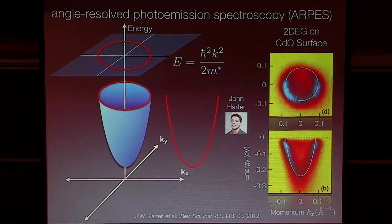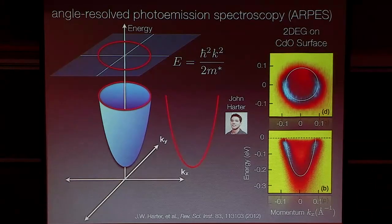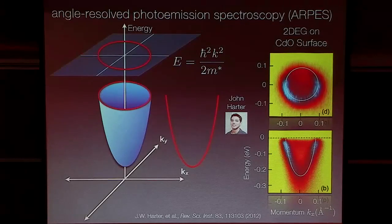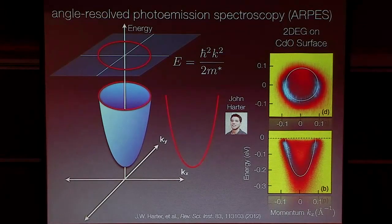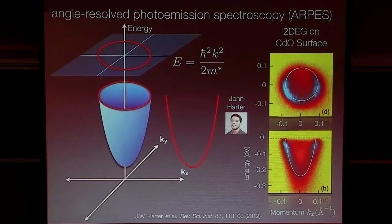We weren't so interested in this surface itself — we were actually using it as a test for a new photon source we had built in the lab. There's a question about why the lower part of the dispersion is washed out. There are some photoelectron matrix elements: depending on the symmetry of the orbital, you'll basically lose intensity at a high-symmetry point. Another possibility is that the lifetime of your excitations decreases the further away you get from the Fermi level — this is Fermi liquid theory — so you get an increased scattering rate.